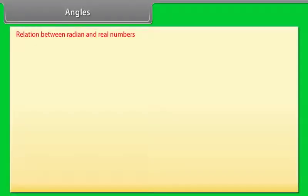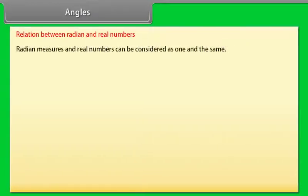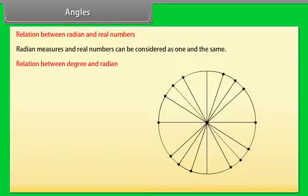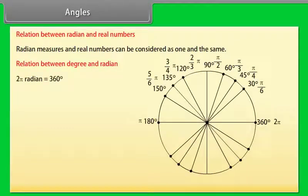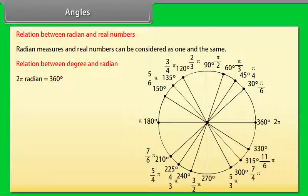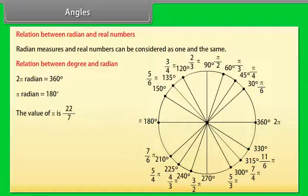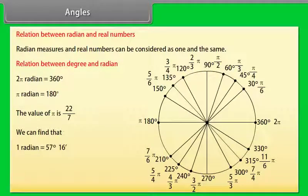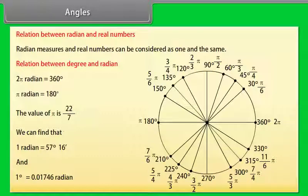Radian measures and real numbers can be considered as one and the same. Relation between degree and radian: 2π radian = 360°, π radian = 180°. The value of π is 22/7. We can find that 1 radian = 57° 16' and 1° = 0.01746 radian.